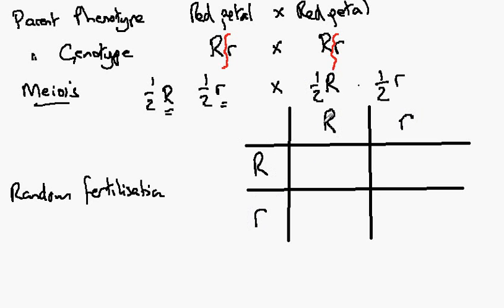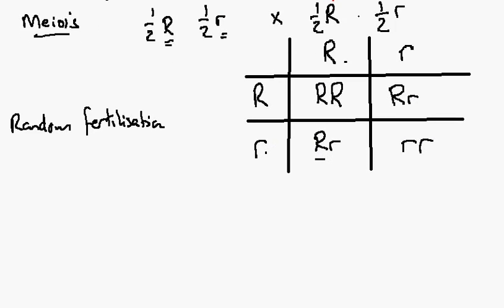If this one fertilizes this one we get the homozygous dominant big R, big R. If this one fertilizes this one we would get the heterozygote. If this one fertilizes this one we would get another heterozygote. Notice that we still place the big R first by convention. And finally, if this allele fertilizes this allele, then we would get little r, little r, the homozygous recessive.